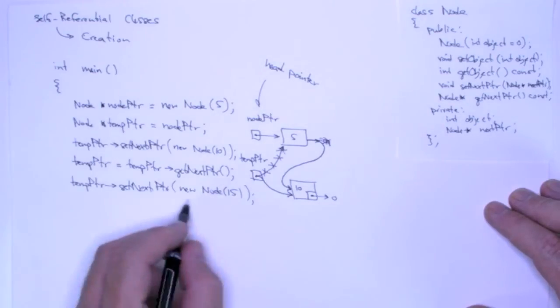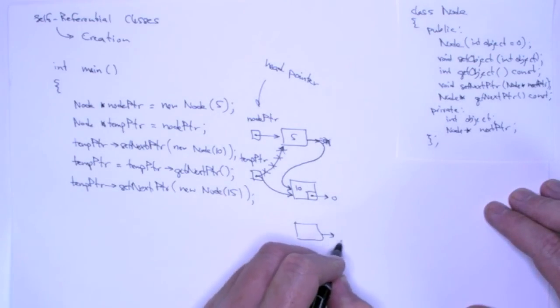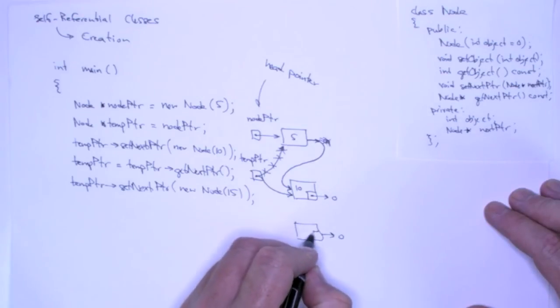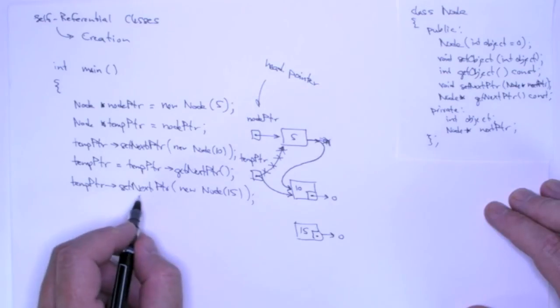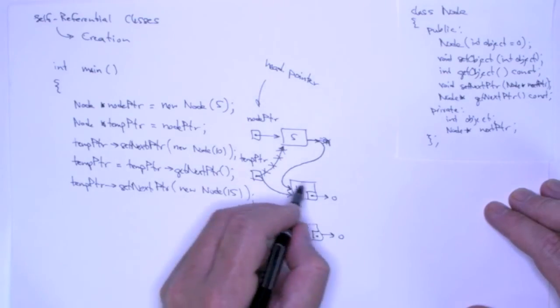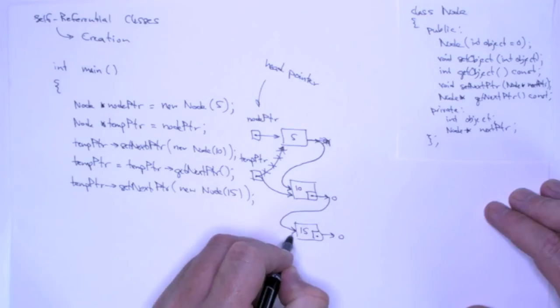And again, allocate memory, execute the constructor, we get that, that address is returned and passed into set next pointer of this object, and we get this list.